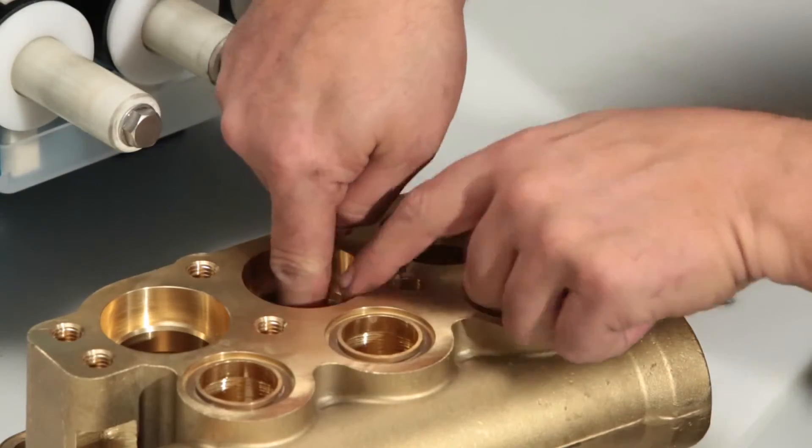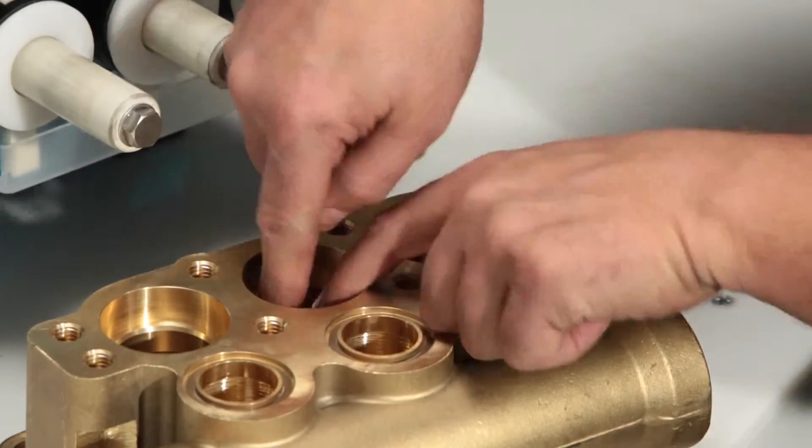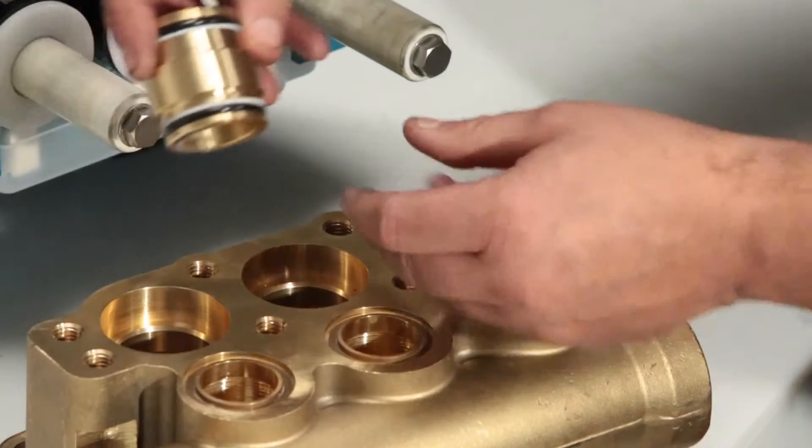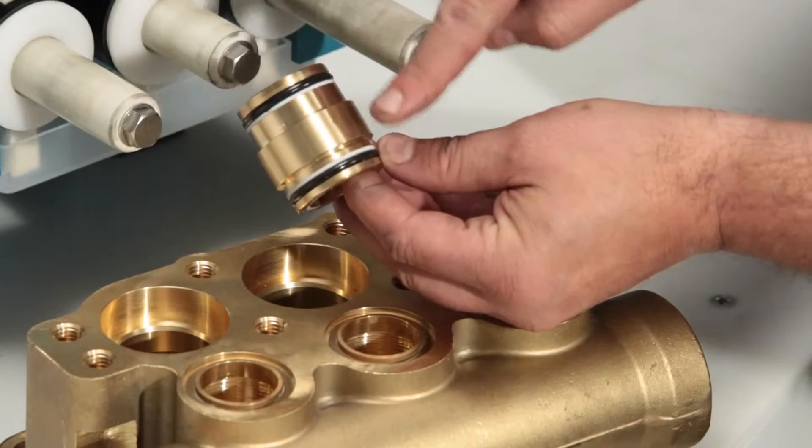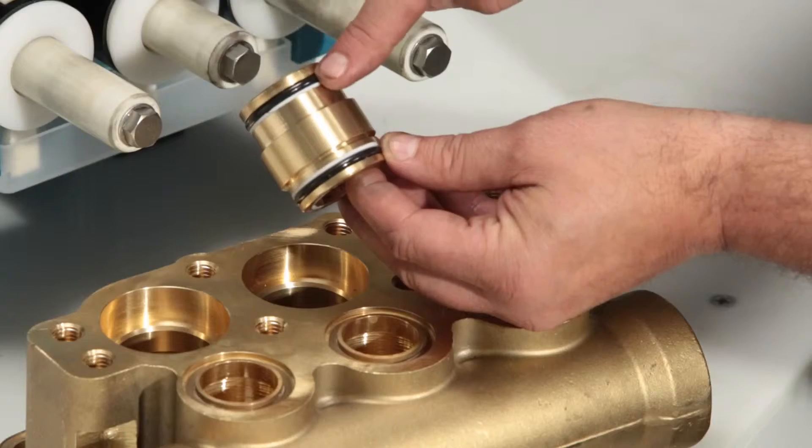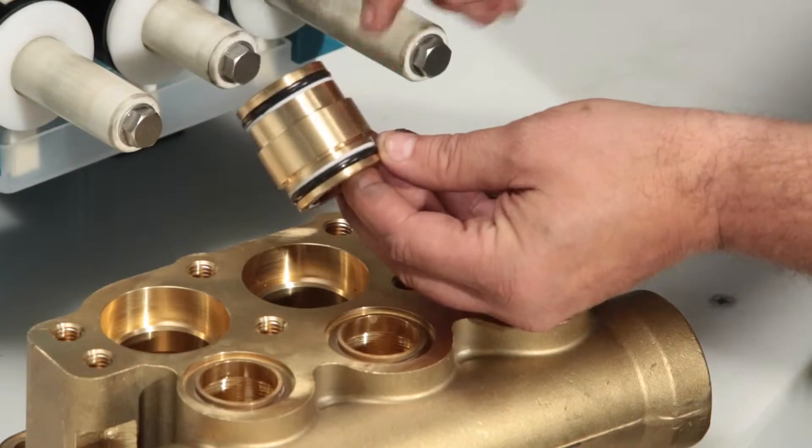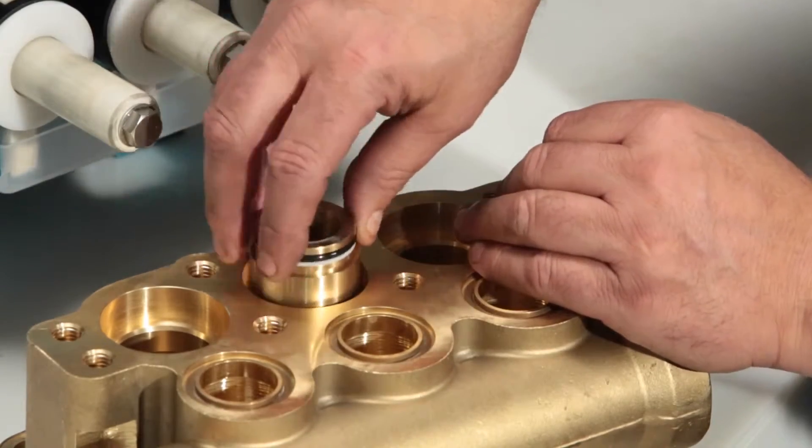Before installing the vpacking spacer, be sure to replace with new o-rings and backup rings included in the seal kit. The vpacking spacer has two distinct steps. The larger side goes down into the discharge manifold. Press into place.